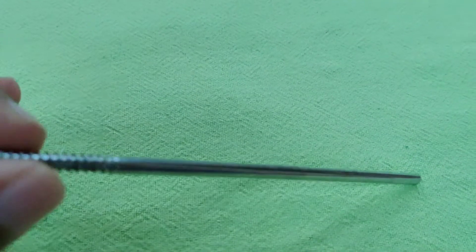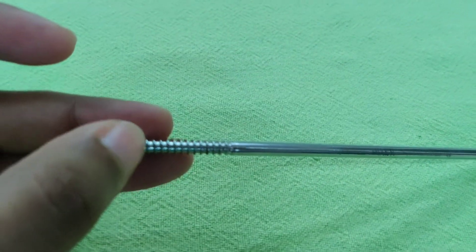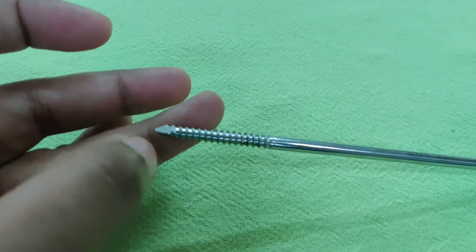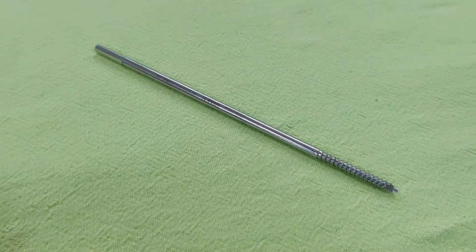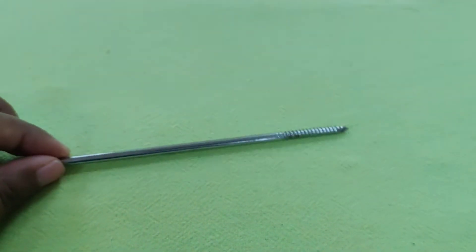It has got a quadrangular top, shaft, threaded end and a tip. This threaded end engages into far cortex of bone and the quadrangular top engages firmly into the T-handle.